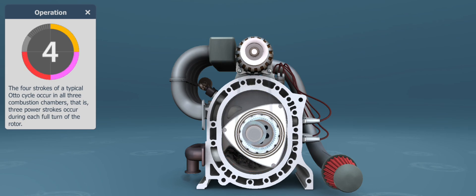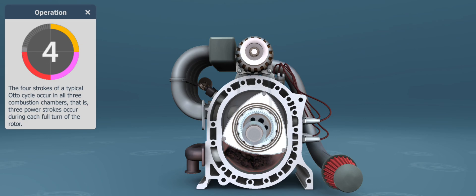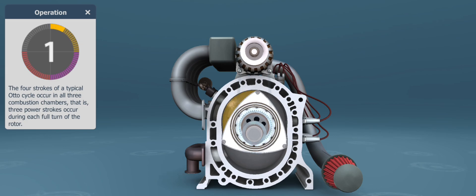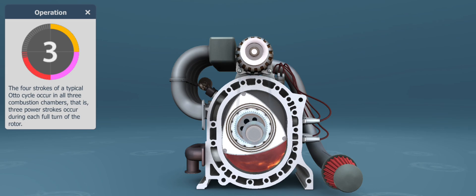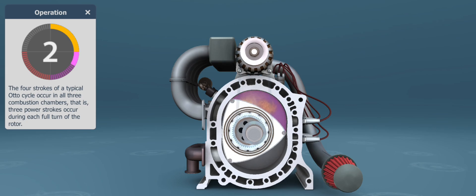The four strokes of a typical auto cycle occur in all three combustion chambers of the Wankel engine. That is, three power strokes occur during each full turn of the crankshaft. The animation shows the processes taking place in one of the three combustion chambers.